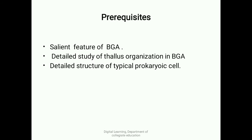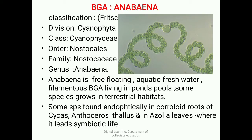Coming to blue-green algae — Anabaena. According to Fritsch's classification, Anabaena belongs to division Cyanophyta, class Cyanophyceae, order Nostocales, family Nostocaceae, genus Anabaena. Anabaena is a free-floating aquatic freshwater filamentous blue-green alga living in ponds, pools, ditches, lakes, etc.